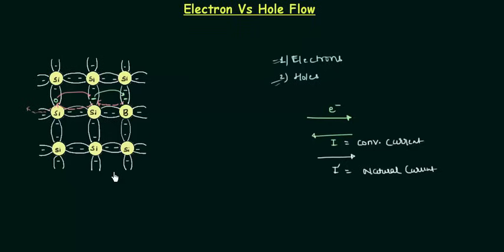This presentation has explained how the hole moves in the semiconductor and how it contributes to the flow of current. You already knew about electron flow, and now you also know how holes flow in the semiconductor. If you have any doubts, you can ask in the comment section. See you in the next one.